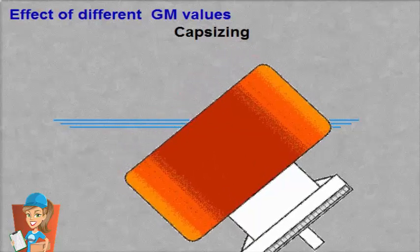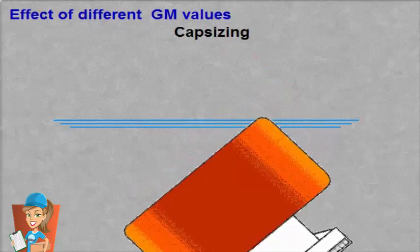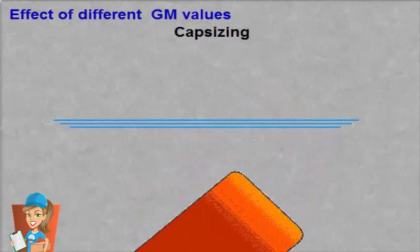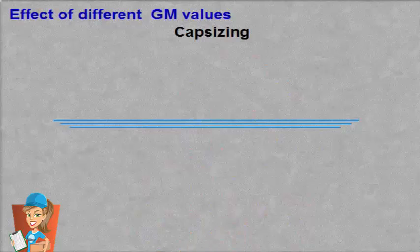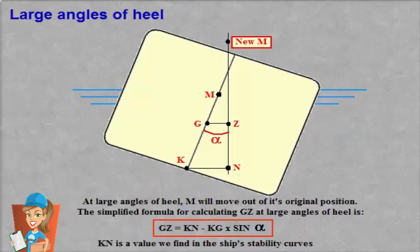At large angles of heel, the metacentre will move out of its original position and we will have to use a more complex formula to calculate the righting lever GZ. This is simplified by the following formula.